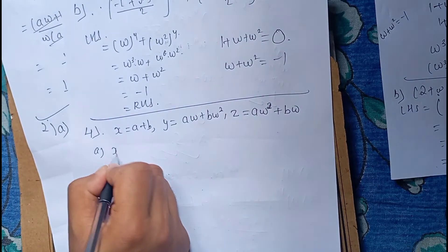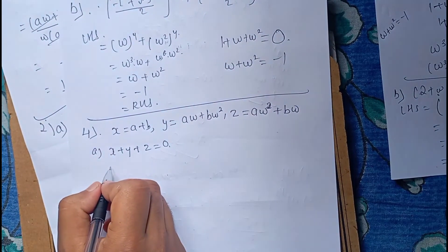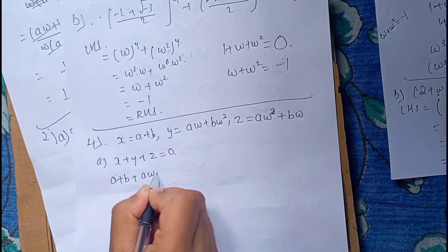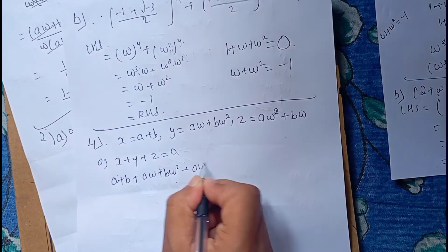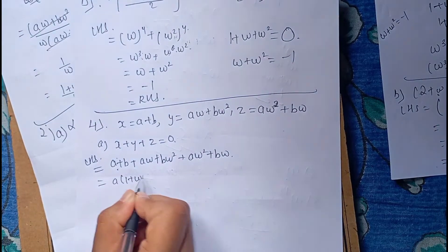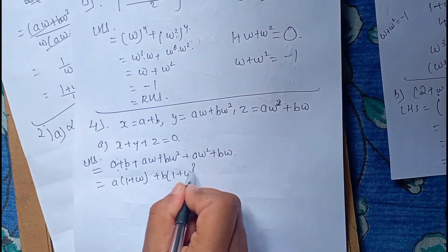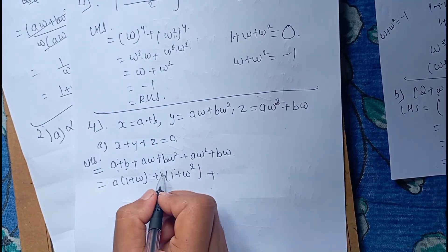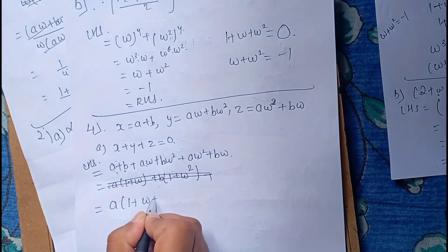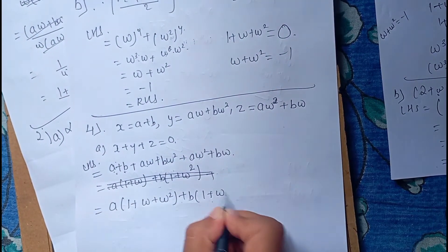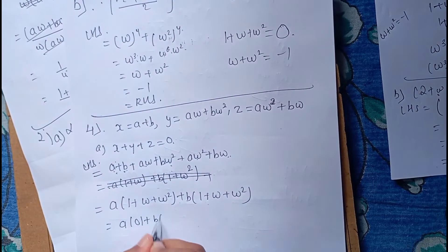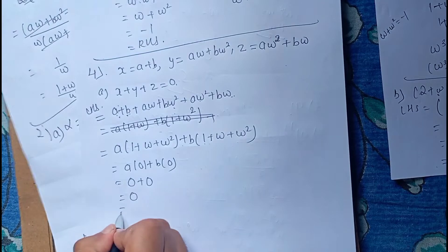We have x plus y plus z is equal to 0. With x equal to a plus b, y equal to a·omega plus b·omega squared, and z equal to a·omega squared plus b·omega. Substituting, we get 1 plus omega plus omega squared equal to 0, which is equal to RHS.